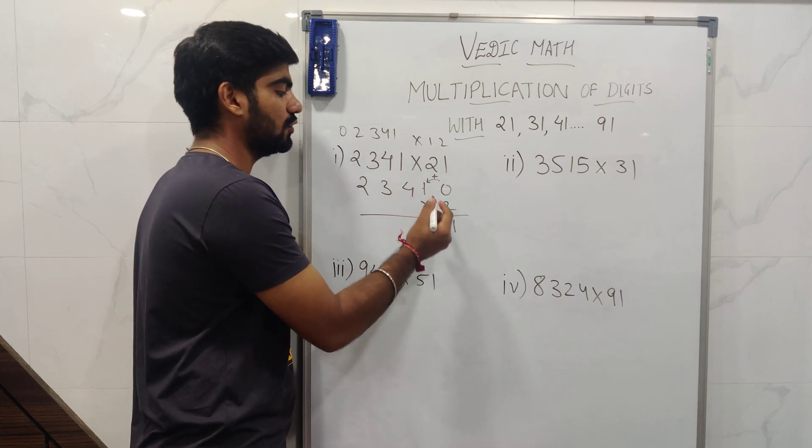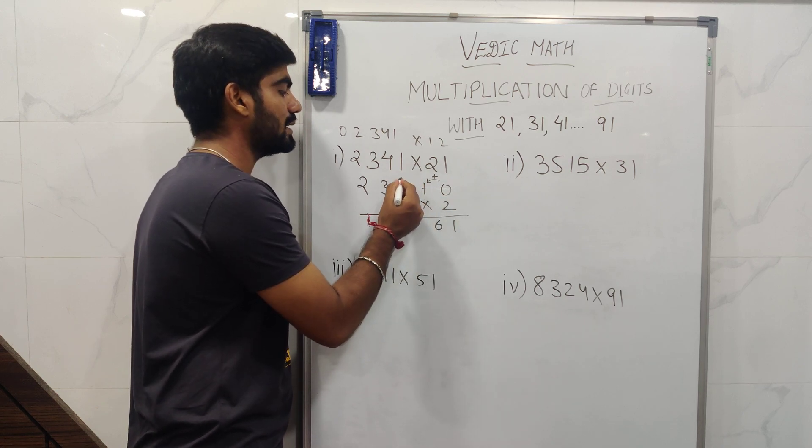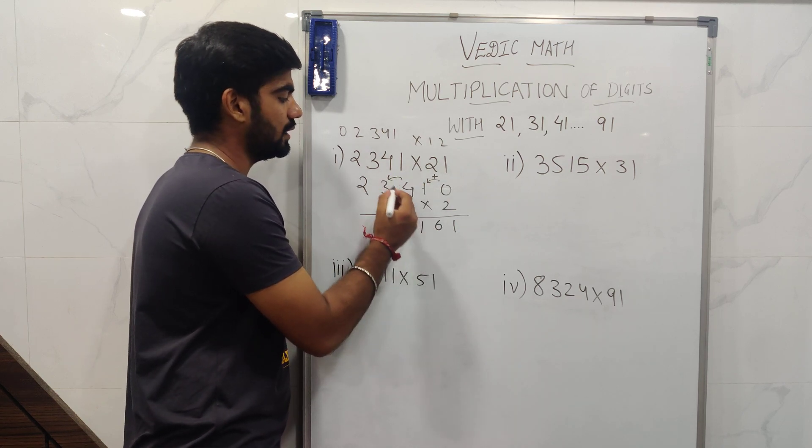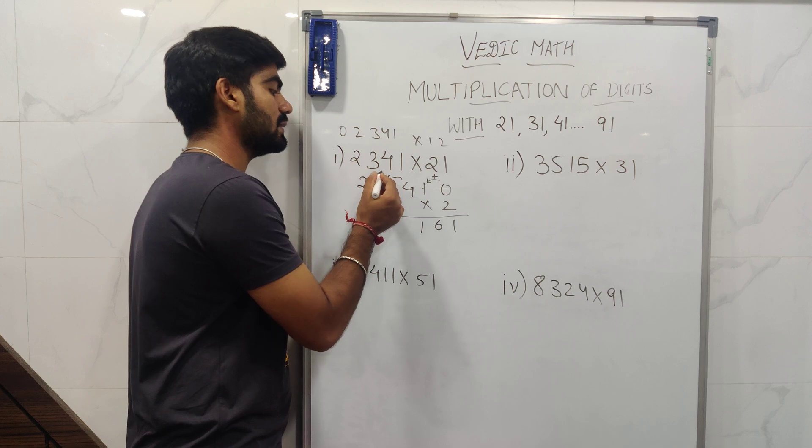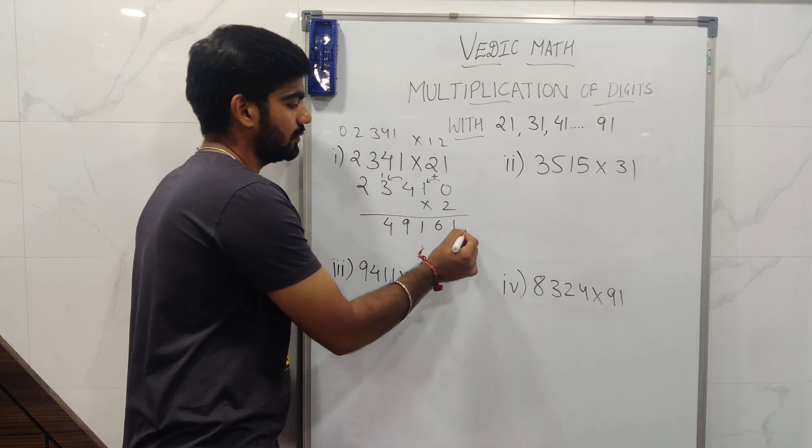Then 2 into 4 is 8, and 8 plus 3 is 11. 2 times 3 is 6, 6 plus 1 is 7, and 7 plus 2 is 9. 2 times 2 is 4.